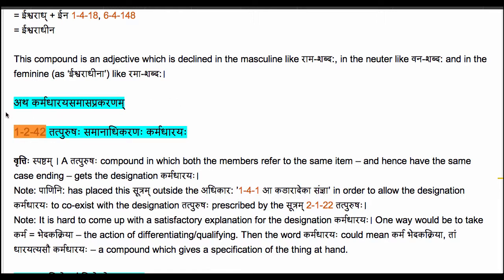Let us now begin the karmadhāraya samāsaprakaraṇam. The first sutra here is 1.2.42, by which Pāṇini defines a karmadhāraya. The sutra reads: tat-puruṣaḥ samānādhikaraṇaḥ karmadhāraya. It means that a tatpuruṣa compound in which both members refer to the same item and hence have the same case ending gets the designation karmadhāraya.